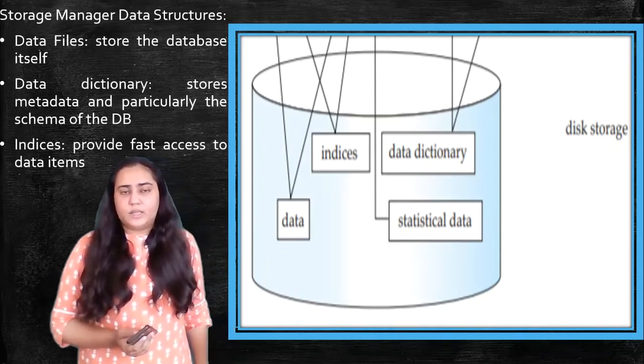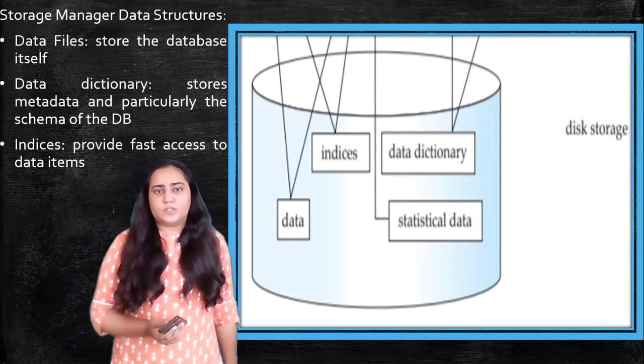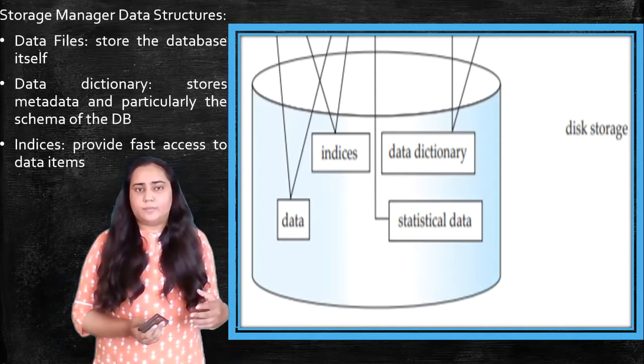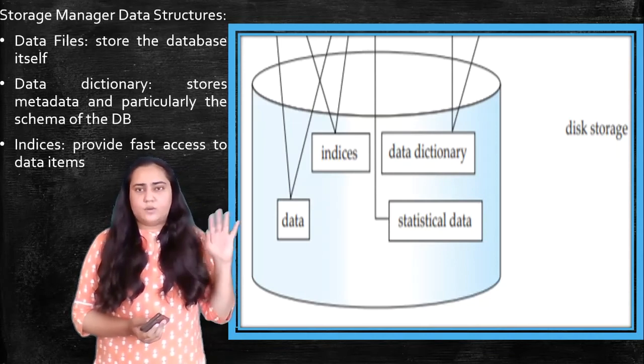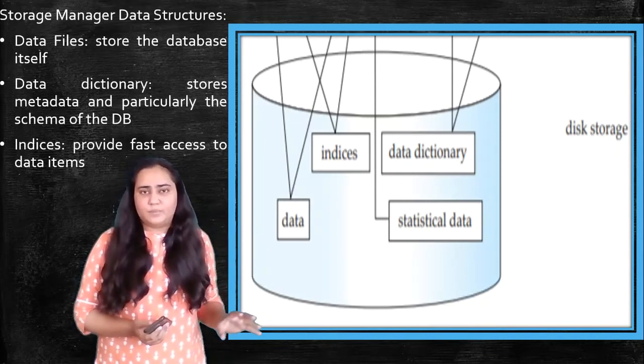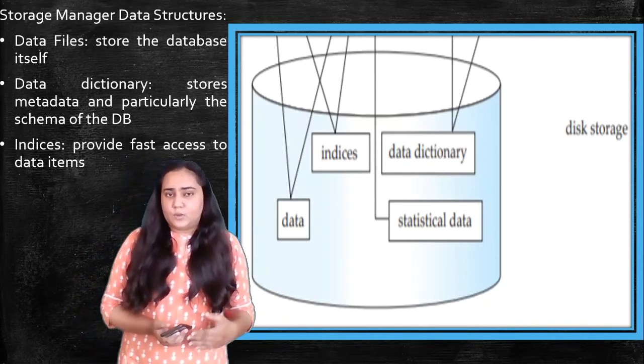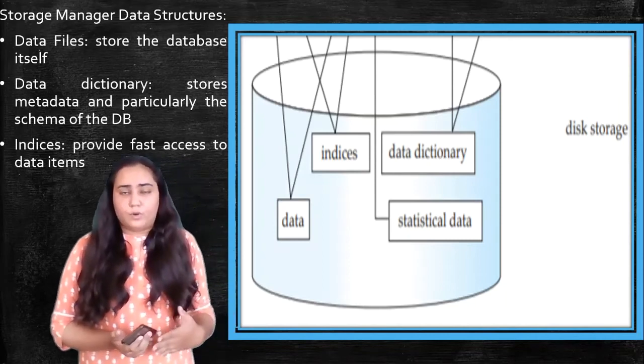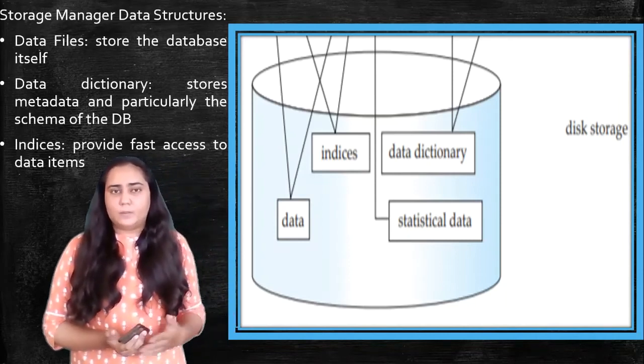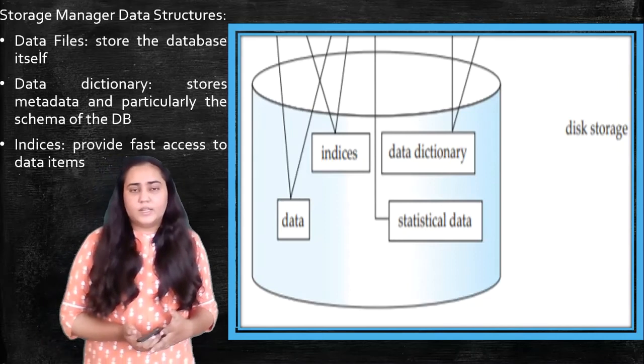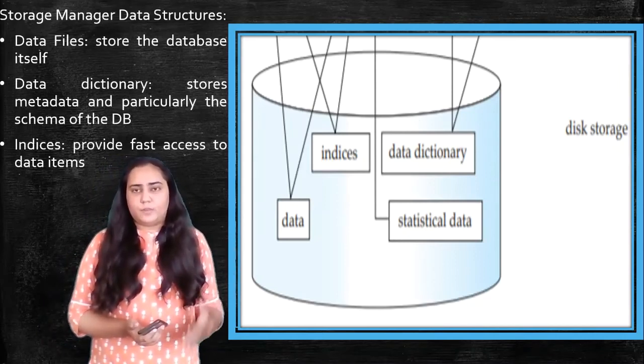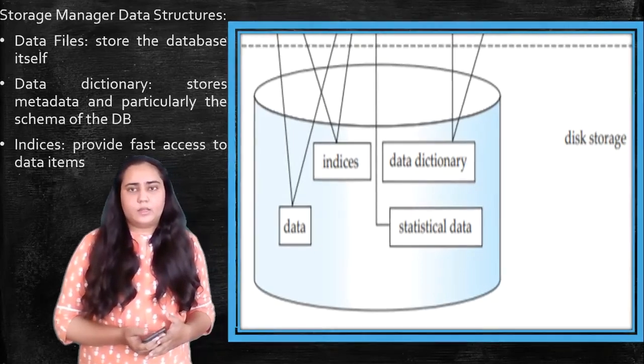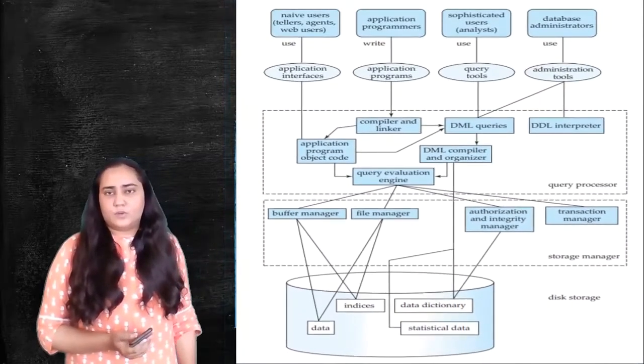And finally, there are also indices. Indices are data structures that actually allow you to access data very quickly, and there's a whole chapter about indices. You're going to learn about those more in detail over there, but right now, you can just understand that they are data structures that allow you to access your data quickly from the database.